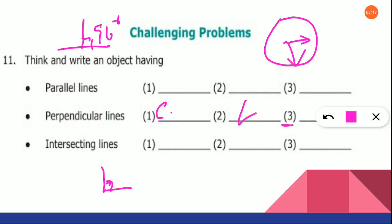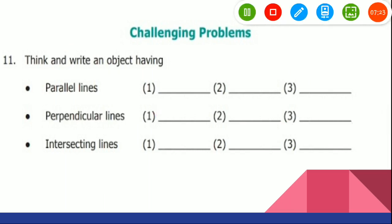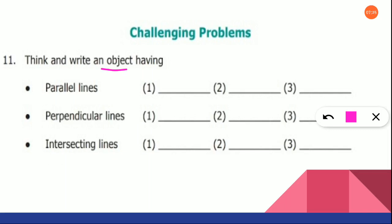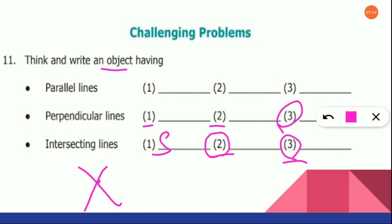Same way you are going to think and write the third one. Now the next one is intersecting lines. Intersecting lines — you have to think of an object. I am going to take a scissor — it will be like this, and this point will be the intersecting point. So the first one, I am going to write it as scissor. The second and third, you are going to think and write it. Think creatively and write.